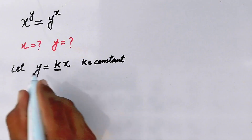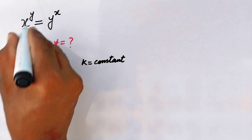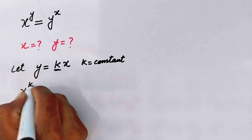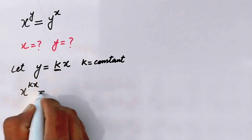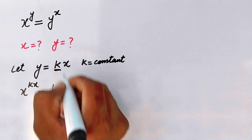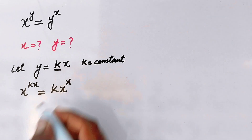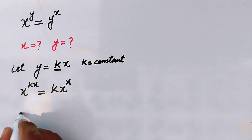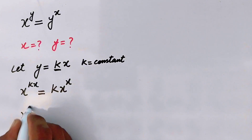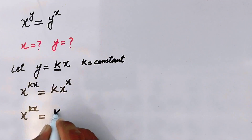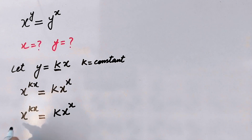By putting the value of y in the above equation, we will write x power kx is equal to kx raised to the power x. Now what we are doing is we will take the square root on both sides, and it will become x power kx equal to kx power x.